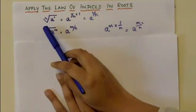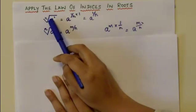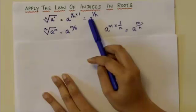In the first example we can see that the nth root of a is equal to a to the power of 1 over n.